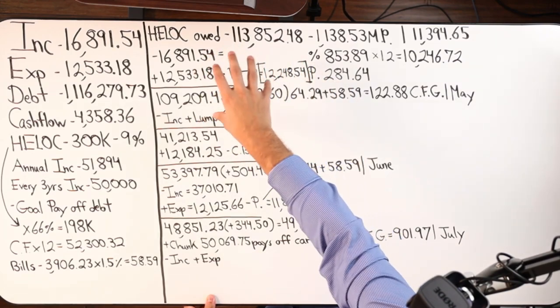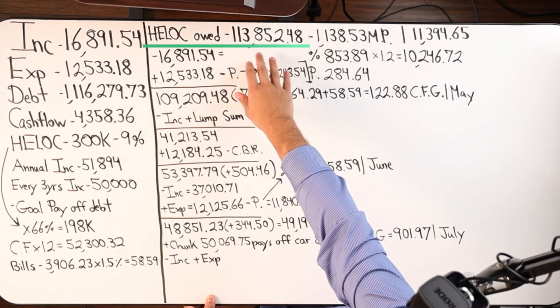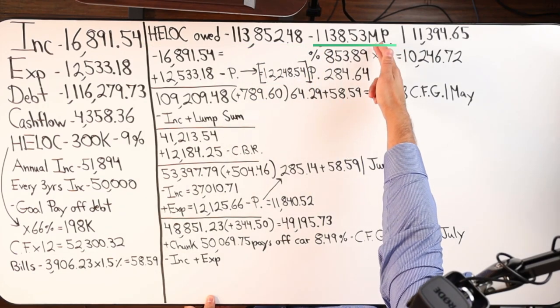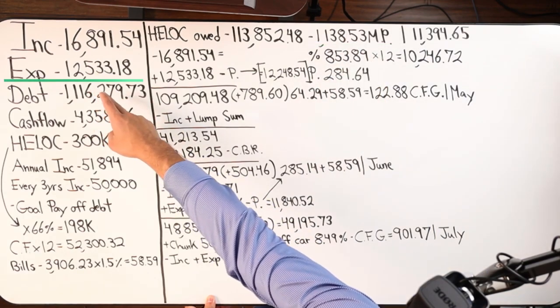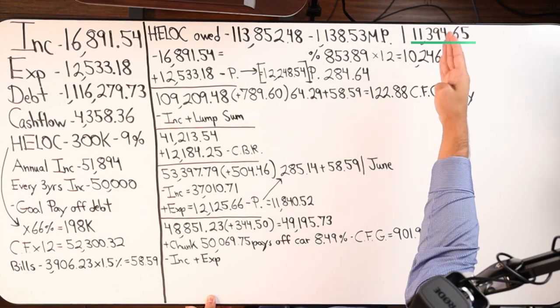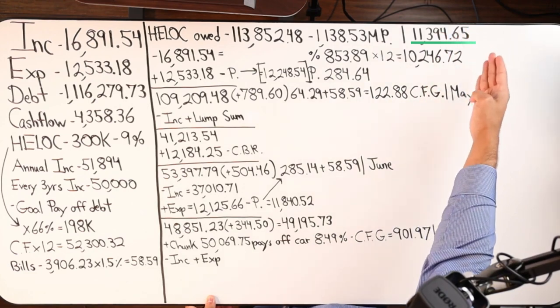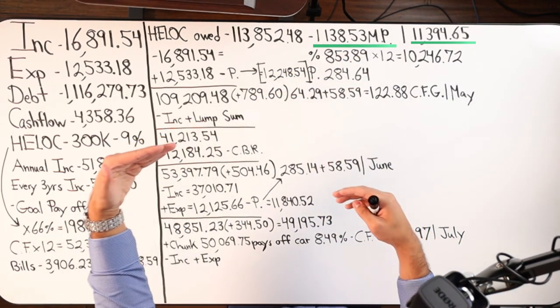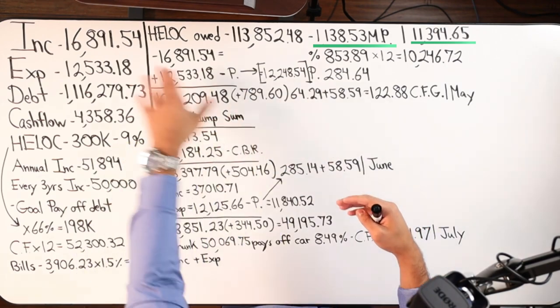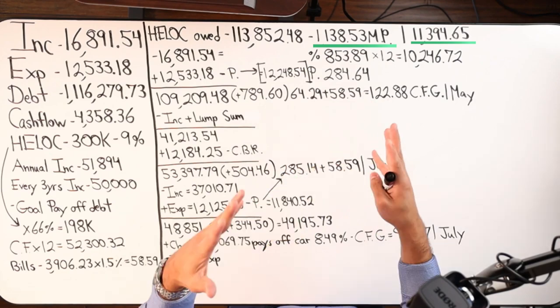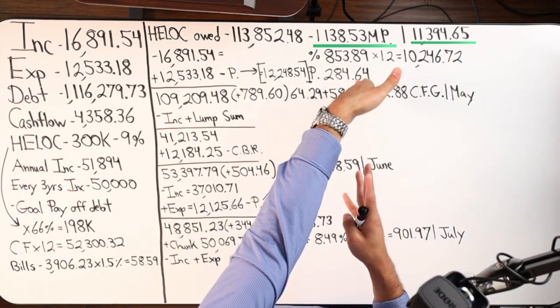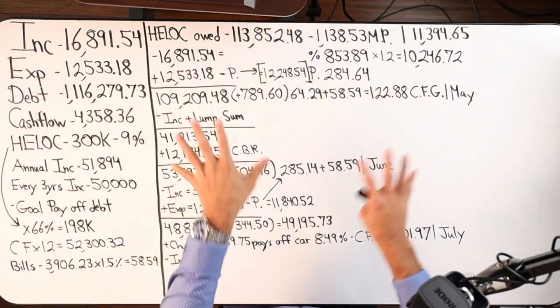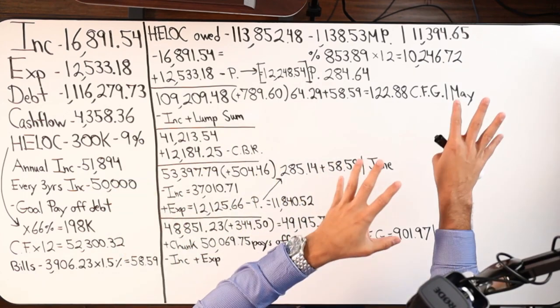So let's break down the home equity line of credit itself. $113,852.48 owed. The monthly payment is $1,138.53. I included that number in the expense. But technically, only $11,394.65 is going to be coming out of the HELOC. Because the payment of $1,138.53, that's going into the HELOC. So when we're dumping all our income into the debt tool, our payment is already getting satisfied when we do that. So what's actually coming out of the HELOC is the other expenses, the other debt payments that this person has or that you have.